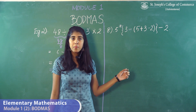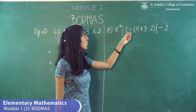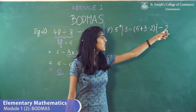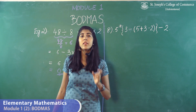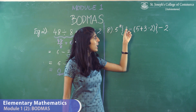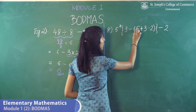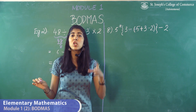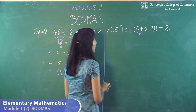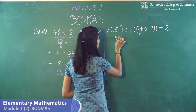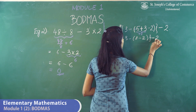We'll solve another sum — the 8th sum in the handout: 5 into 3 minus 5 plus 3 minus 2 minus 2. There are two brackets and no bar bracket, so we start with the curved bracket. When solving inside the bracket, we also apply BODMAS. There are only plus and minus signs inside, so we add first: this becomes 8 plus 8. Rewriting gives 5 into 3 minus 8 minus 2 minus 2.